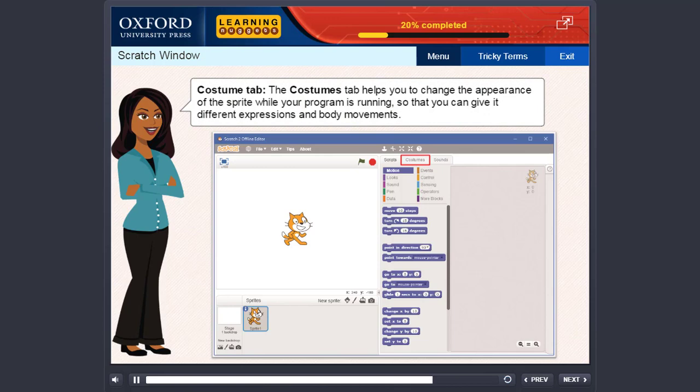Costume Tab: The Costumes Tab helps you to change the appearance of the sprite while your program is running, so that you can give it different expressions and body movements.